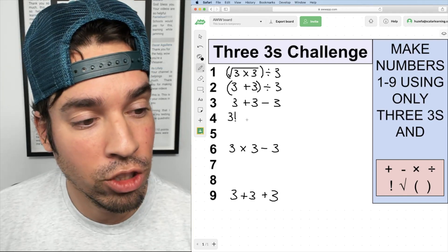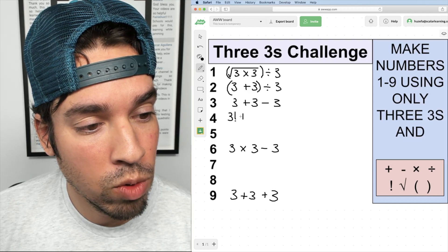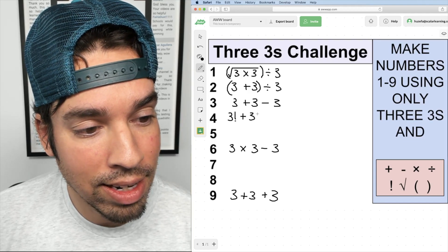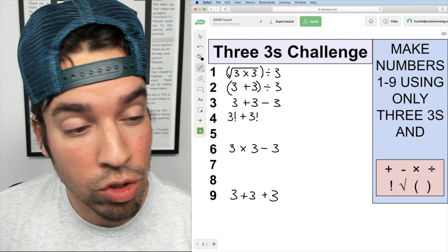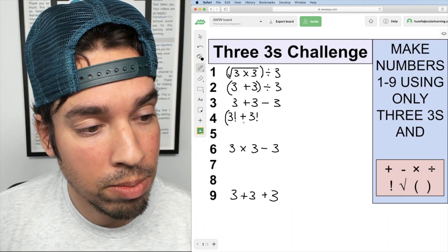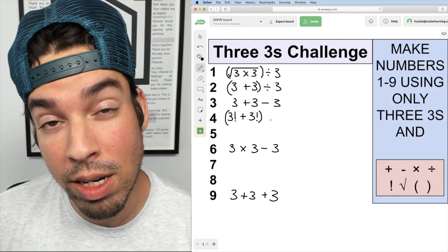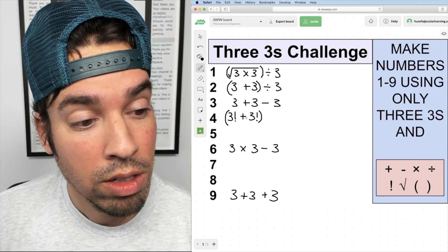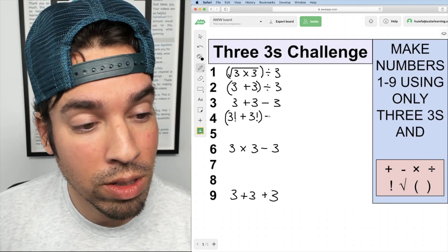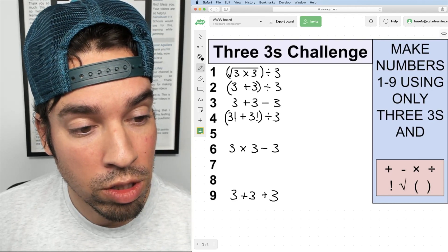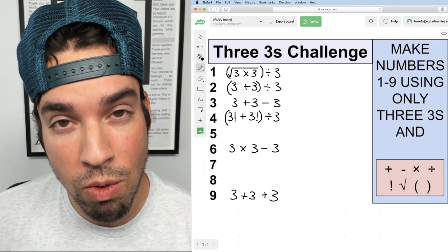Then I'm going to add that again to three factorial. So that's six plus six which is twelve. Now I'm going to take that twelve, put it in parentheses so we know we're going to do the addition before anything else, and then we're going to divide by three. So this becomes six plus six which is twelve divided by three which is four.